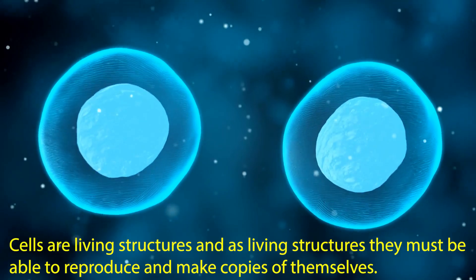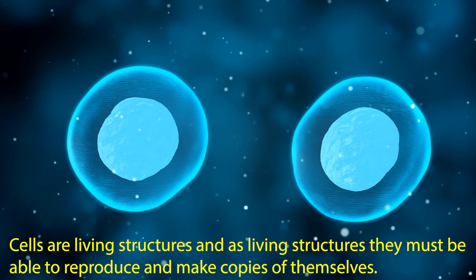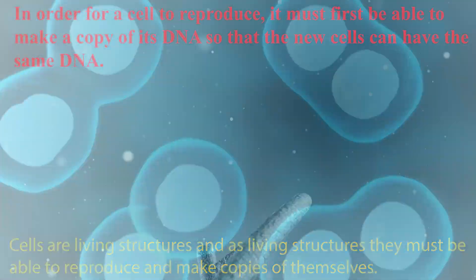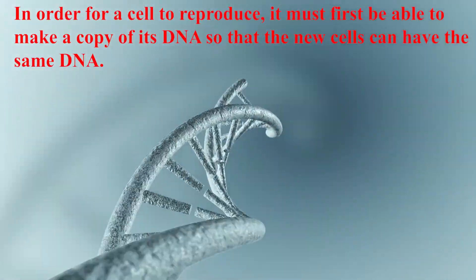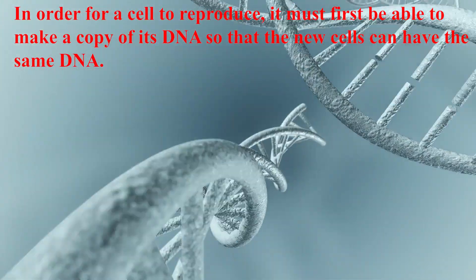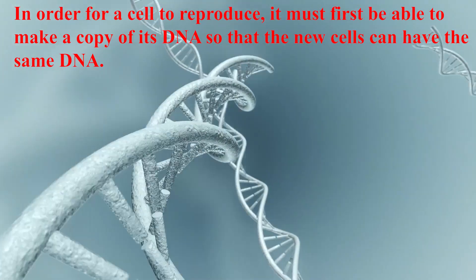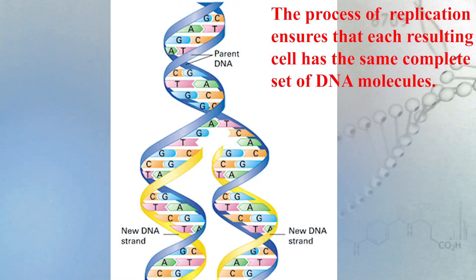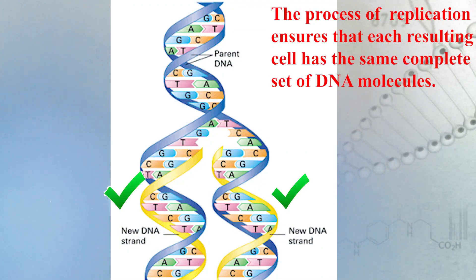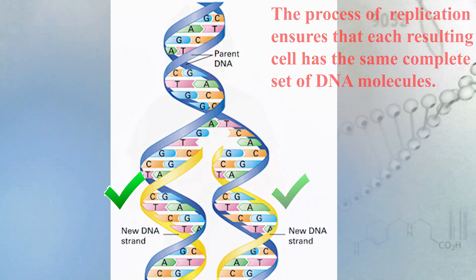Let's explain the process of DNA replication and its role in cell division. Think about this: cells have living structures and as living structures, they must be able to make copies of themselves. In order for a cell to reproduce, it must first be able to make a copy of its DNA so that the new cells can have the same DNA. The process of replication ensures that each resulting cell has the same complete set of DNA molecules.